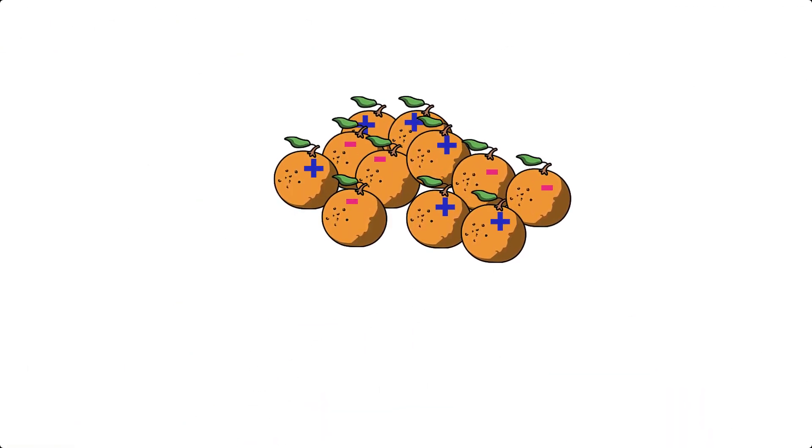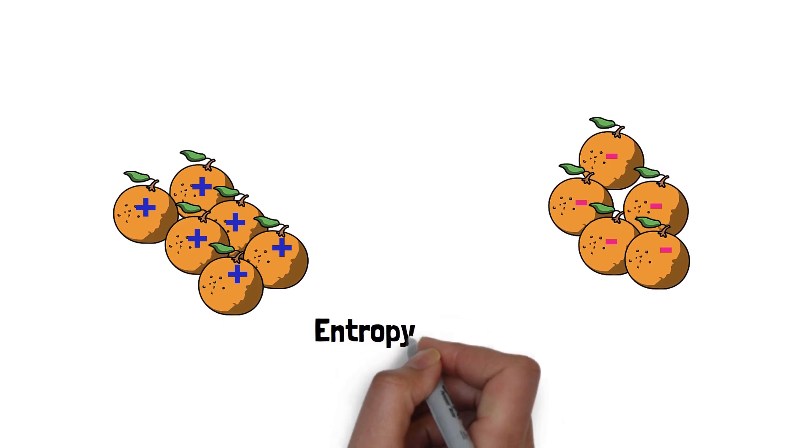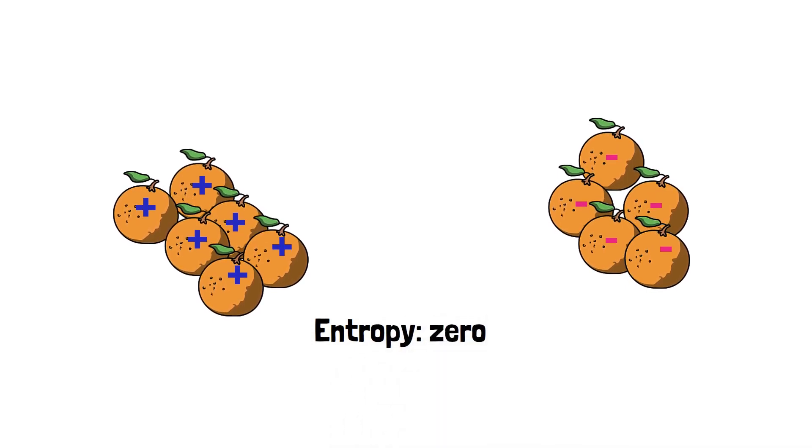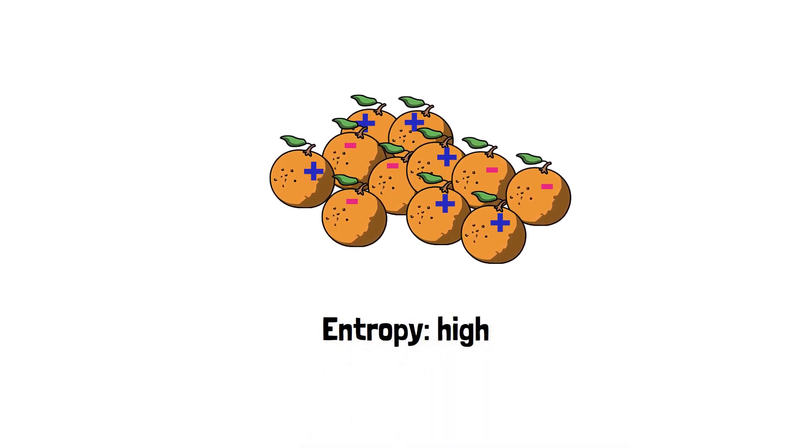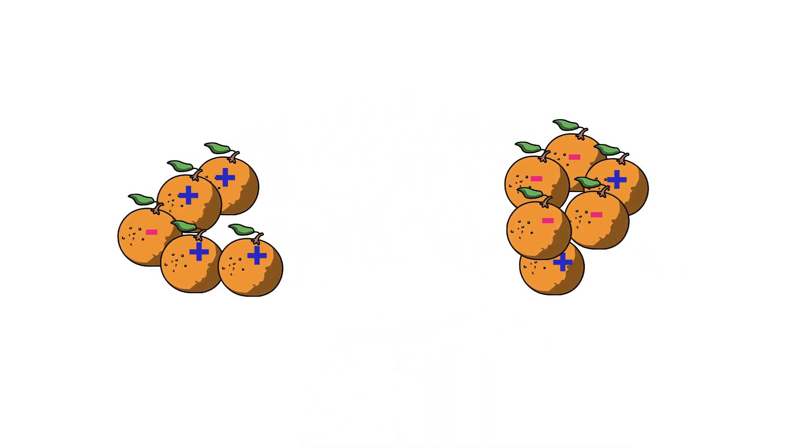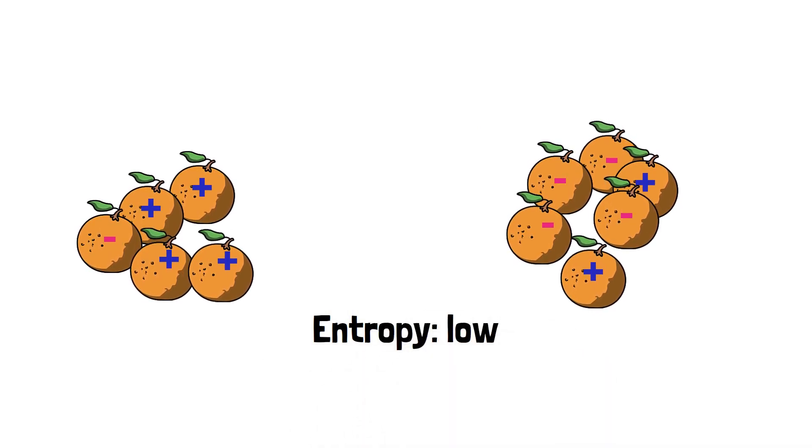Say you have a bunch of oranges. You want to split them into the positive, top class ones, and the negative ones. But starting from a high entropy jumble is usually hard. In practice, you find a pretty good split, and then repeat on each subgroup.